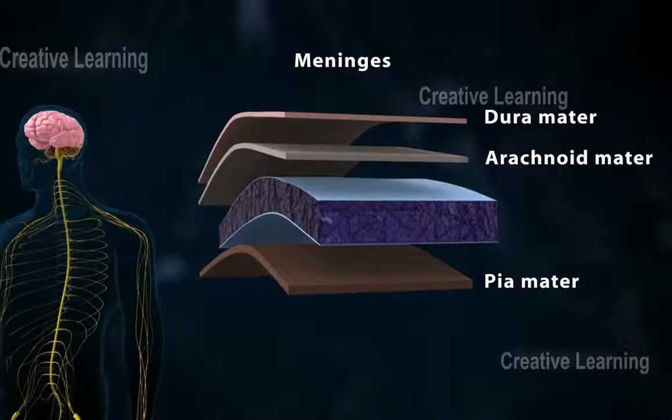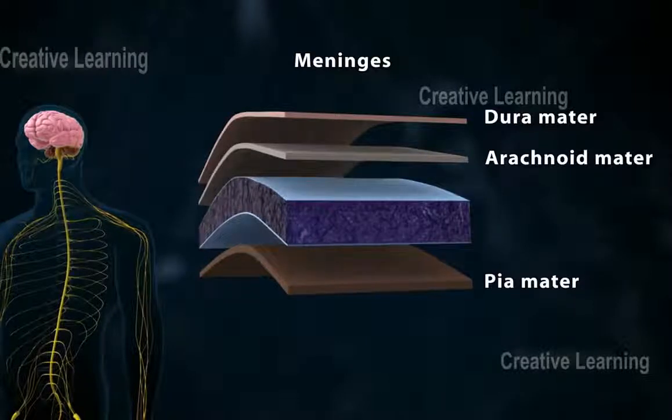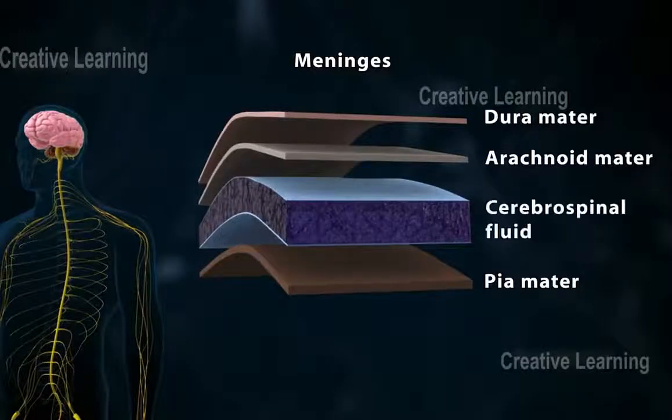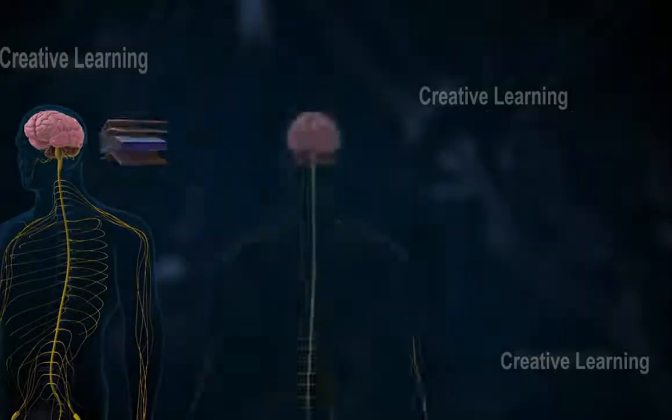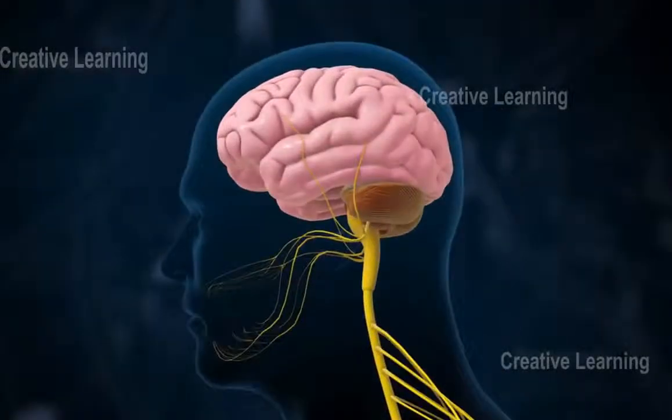The subarachnoid space, or the space between the arachnoid and the pia mater, is filled with cerebrospinal fluid.